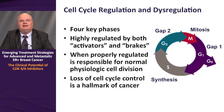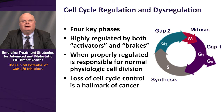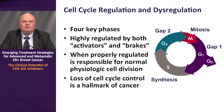In terms of cell cycle regulation and dysregulation, there are four key phases in the cell cycle. These phases are highly regulated, both by activators that control progression through the cycle, as well as brakes that attenuate progression. When properly regulated, this pathway is responsible for normal physiologic cell division. Loss of cell cycle control, as a result of aberrancies and dysregulation, is indeed one of the hallmarks of cancer, as highlighted by Hanahan and Weinberg in their classical review of the hallmarks of cancer.